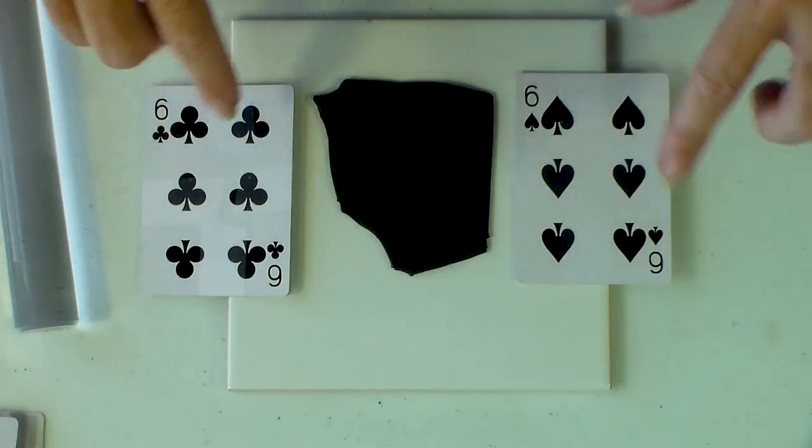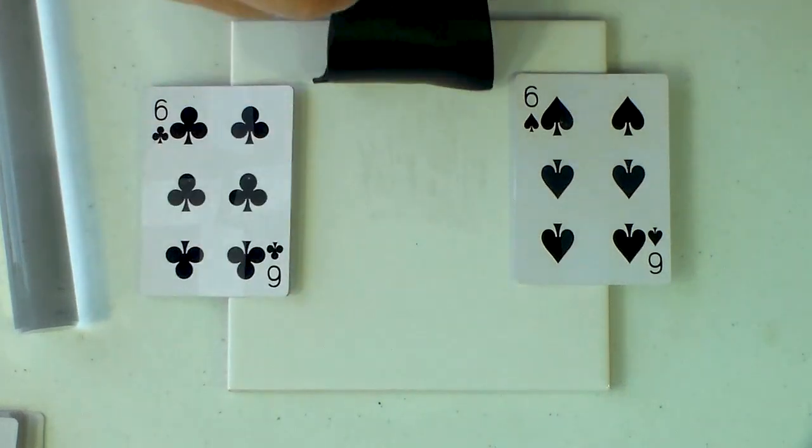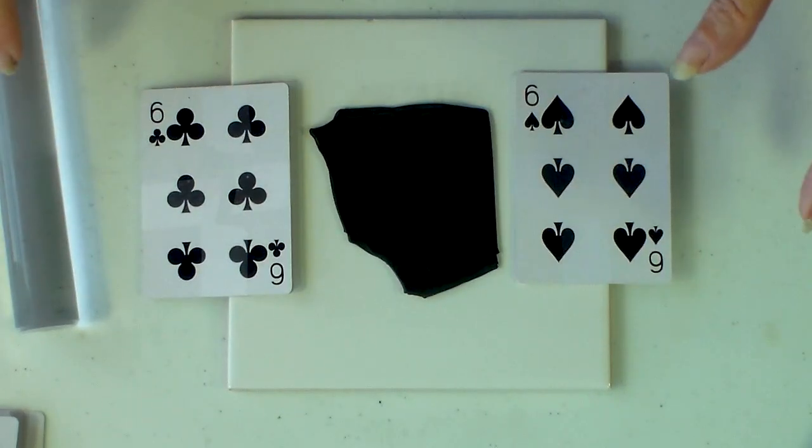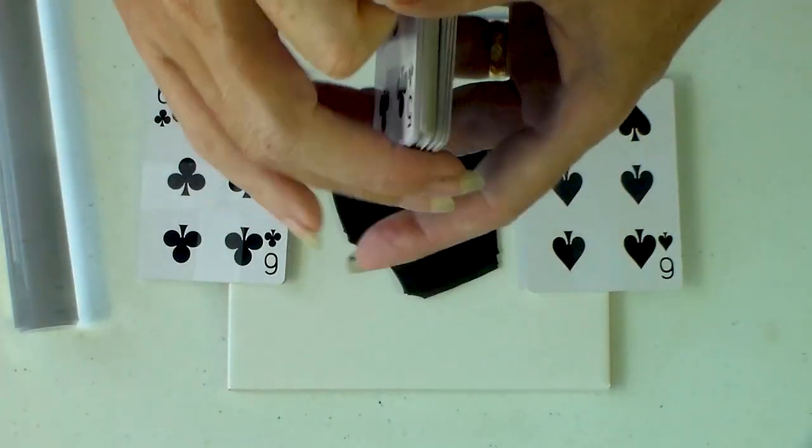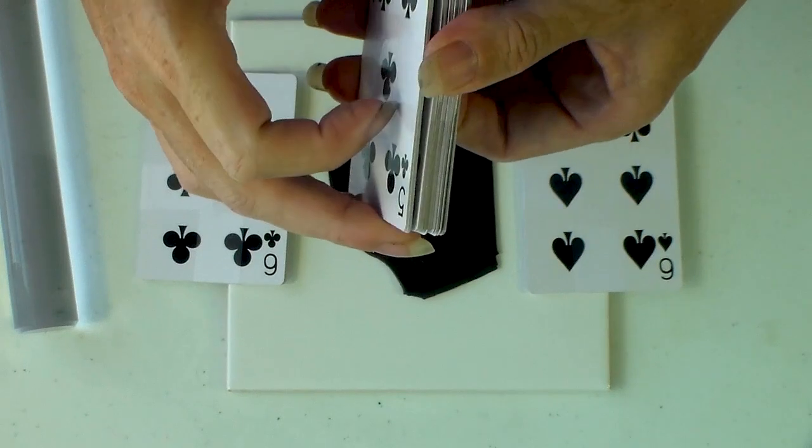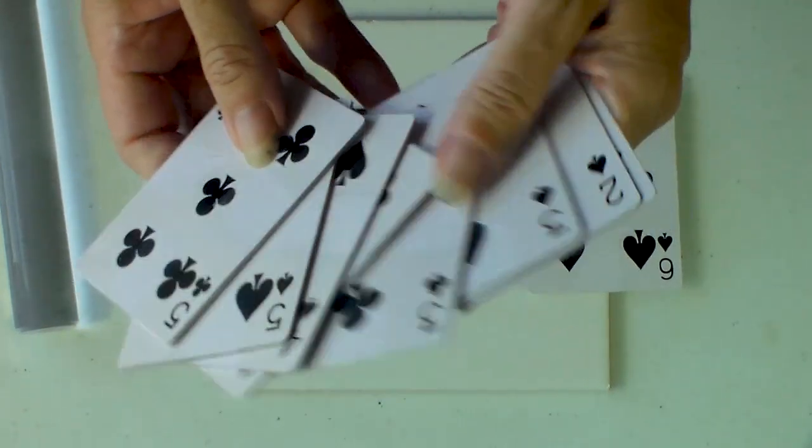So first of all we need a surface to work on. I'm working on a nice glossy ceramic tile so that my clay doesn't stick to it and then we'll need to be able to roll our clay out into a sheet and let me give you a little tip.